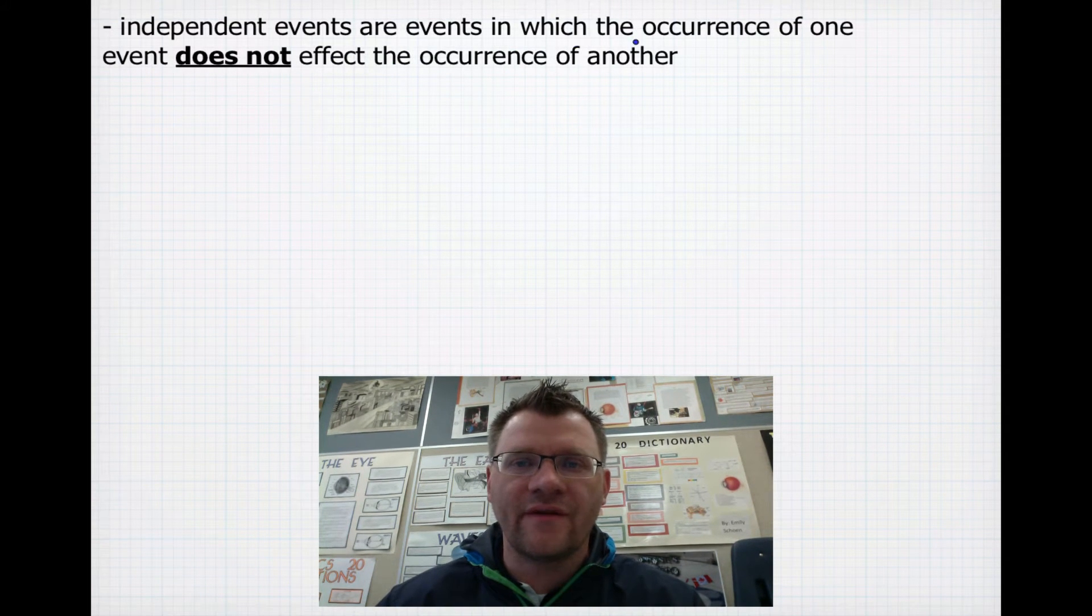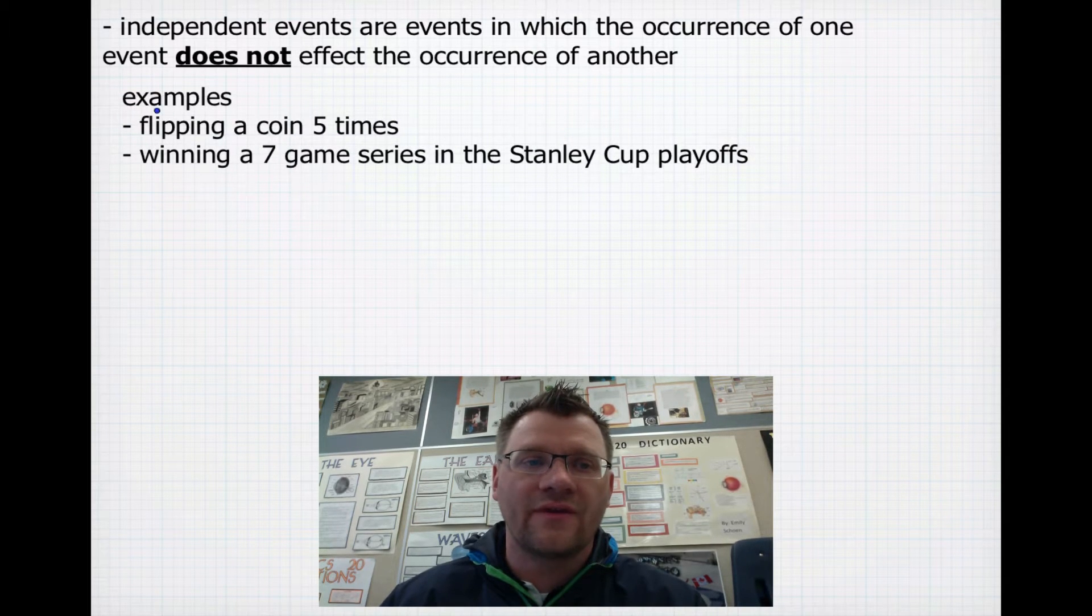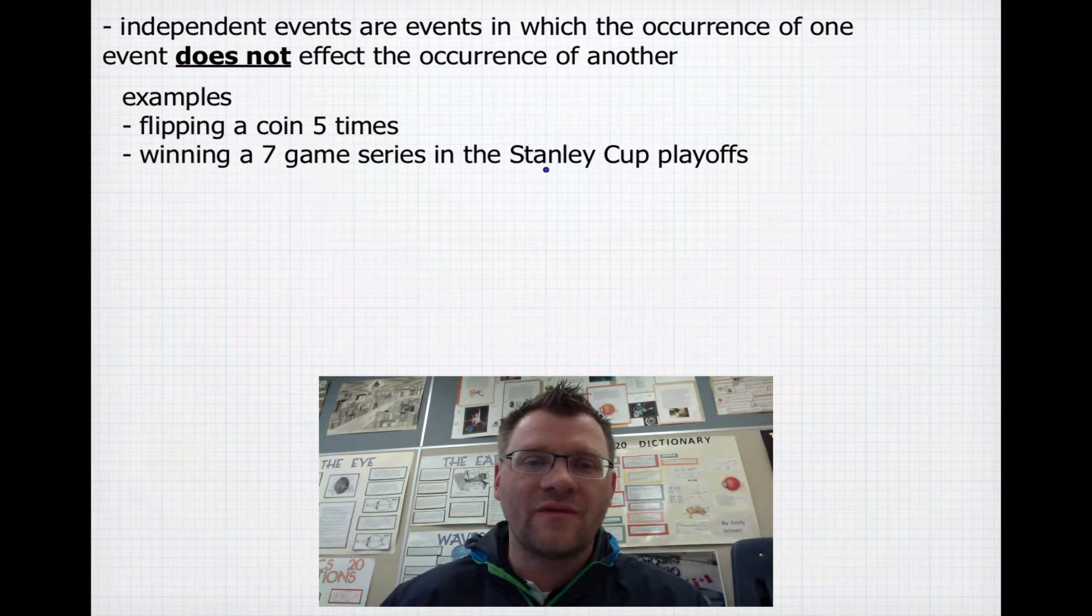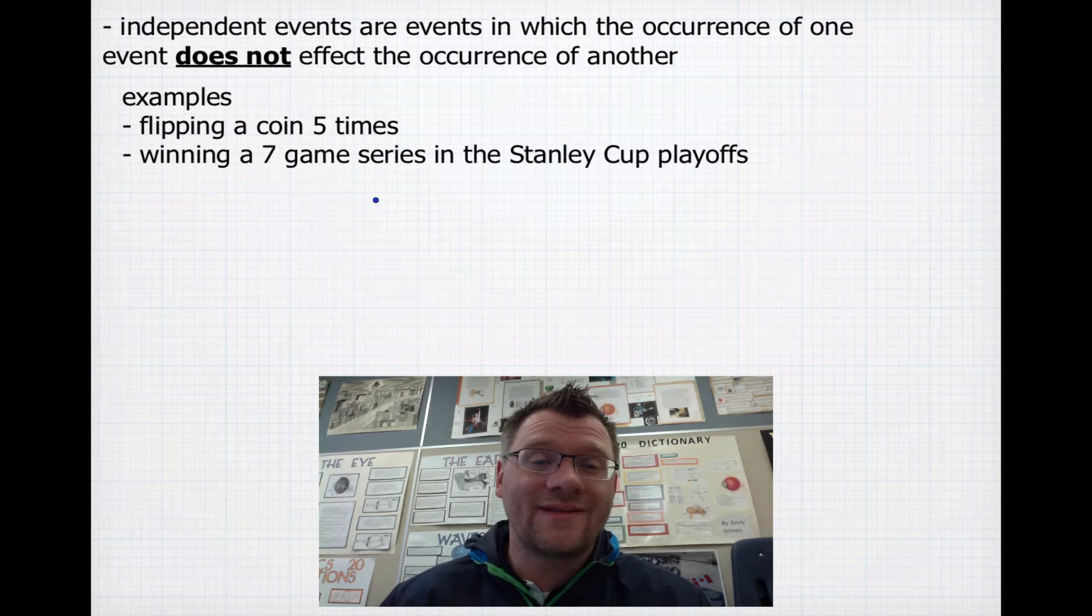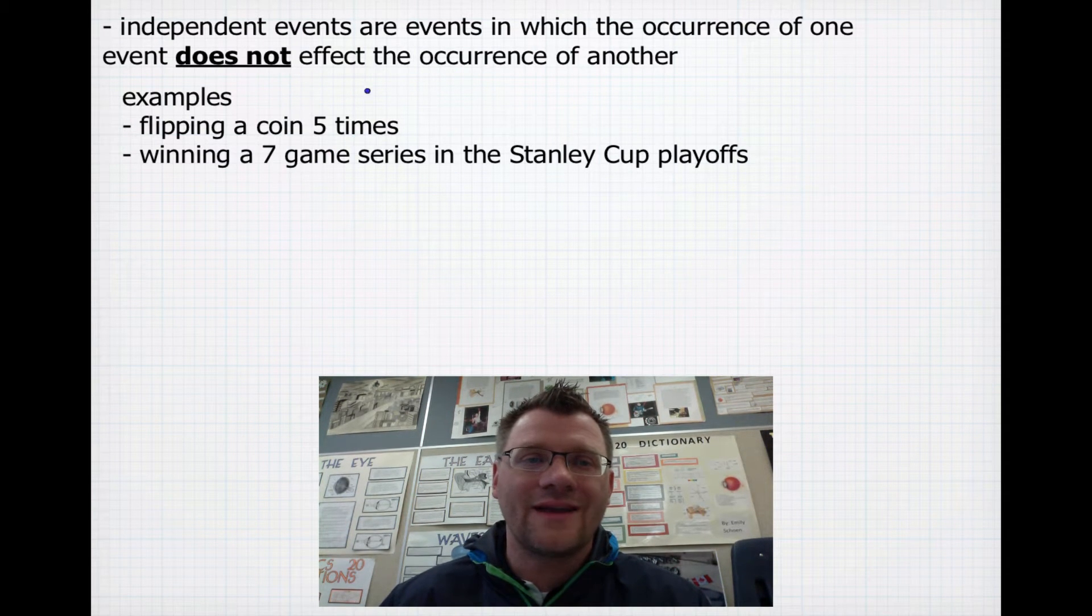So independent events are events in which the occurrence of one event does not affect the occurrence of another. So examples: flipping a coin five times, whether or not you got a tails or a head on the first time has no effect on what you're going to get the next time. All those events are independent. Winning a seven-game series in the Stanley Cup playoffs, it actually doesn't matter how you played the last game. The results, you still have a 50-50 chance every time that you play a game, either you're going to win it or lose it. So those are events that are independent.